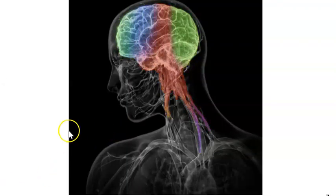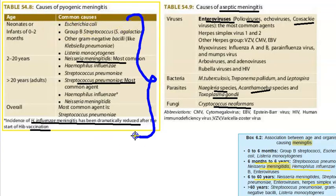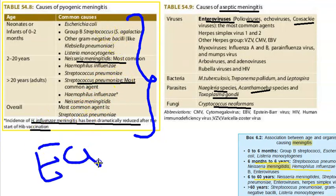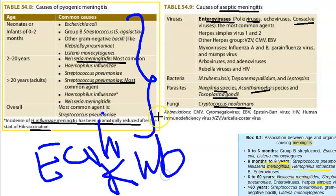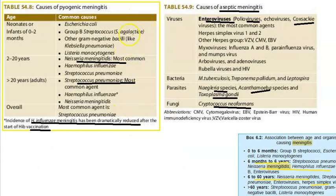Looking at the complete list of bacteria causing pyogenic meningitis: E. coli, Streptococcus, Klebsiella, Neisseria meningitidis (which also causes deadly rashes), Haemophilus influenzae (less common now due to vaccination), Streptococcus agalactiae, and others. These are all causes of pyogenic (septic) meningitis.